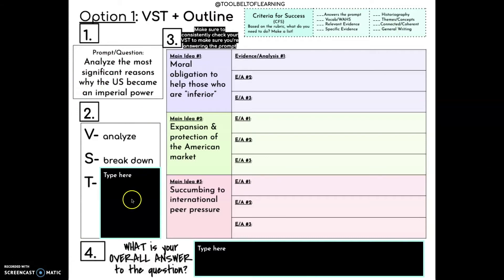Here's the question. The very first thing they have to do is break down the prompt using VST. The V stands for verb, the S stands for skill, the definition of the verb, and then T are going to be the key words from the prompt to make sure they're staying relevant to what it's asking. So words like significant, reasons, U.S., imperial power.